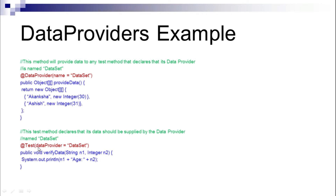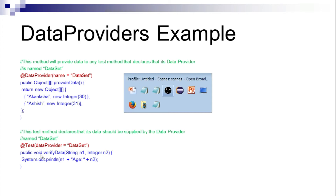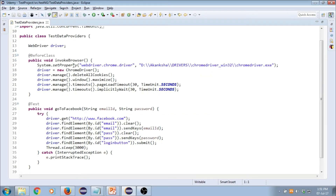The data provider is sending these values to the test because the test has clearly mentioned it wants to use 'dataSet' as its data provider. Since the data provider sends two columns, the test method must be ready to take those two column values — that's why there are two parameters: one String argument and one Integer argument. When you run it, the test will automatically be called the number of times equal to the rows of data present, so ten rows means the test runs ten times with ten sets of data.